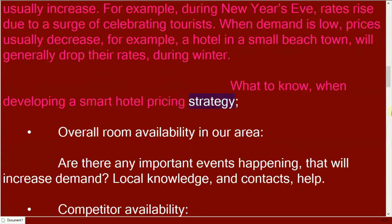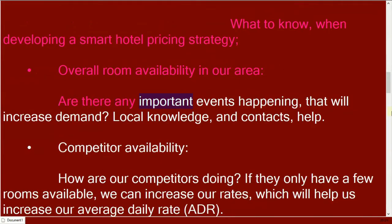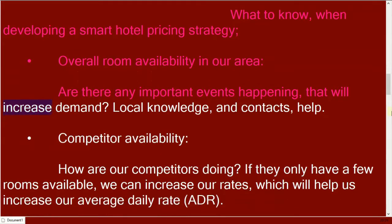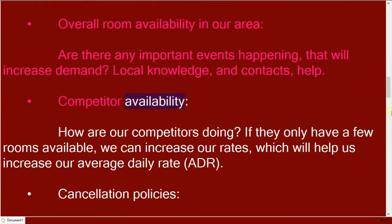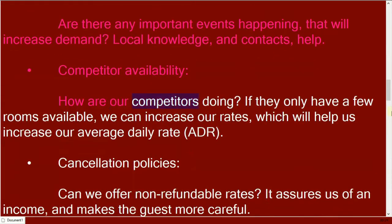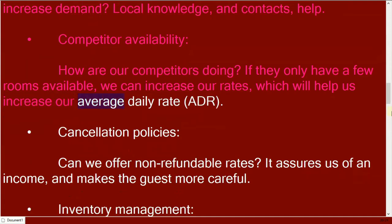What should you know when developing a smart hotel pricing strategy? First, overall room availability in our area — are there any important events happening that will increase demand? Local knowledge and contacts help. Second, competitor availability — how are our competitors doing? If they only have a few rooms available, we can increase our rates, which will help us increase our average daily rate.